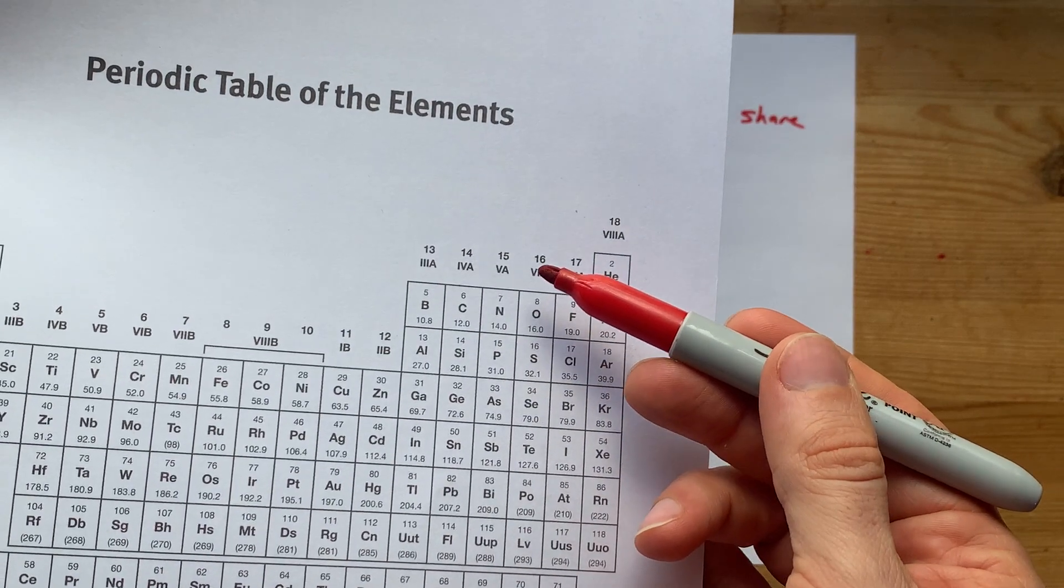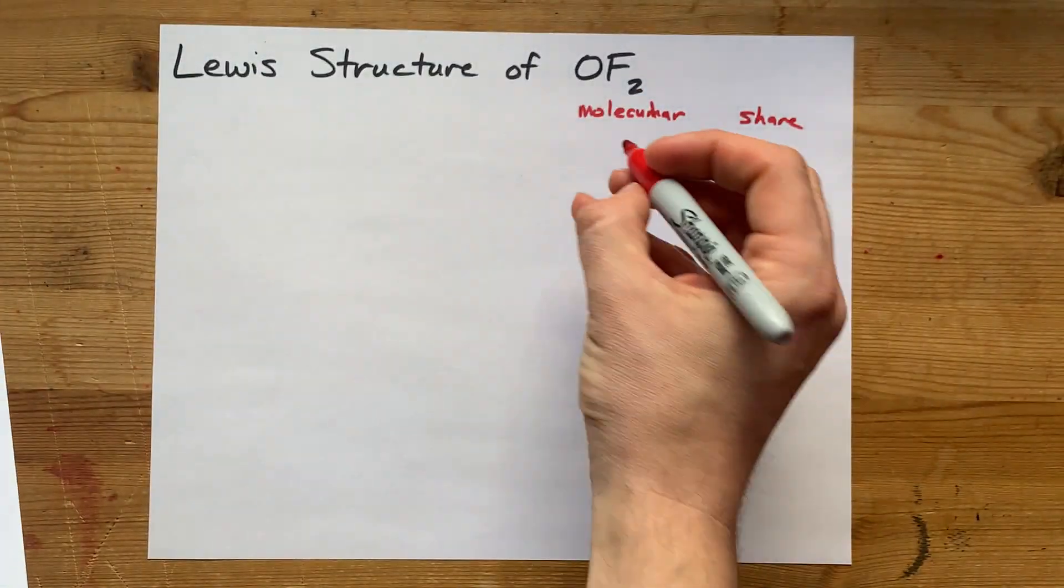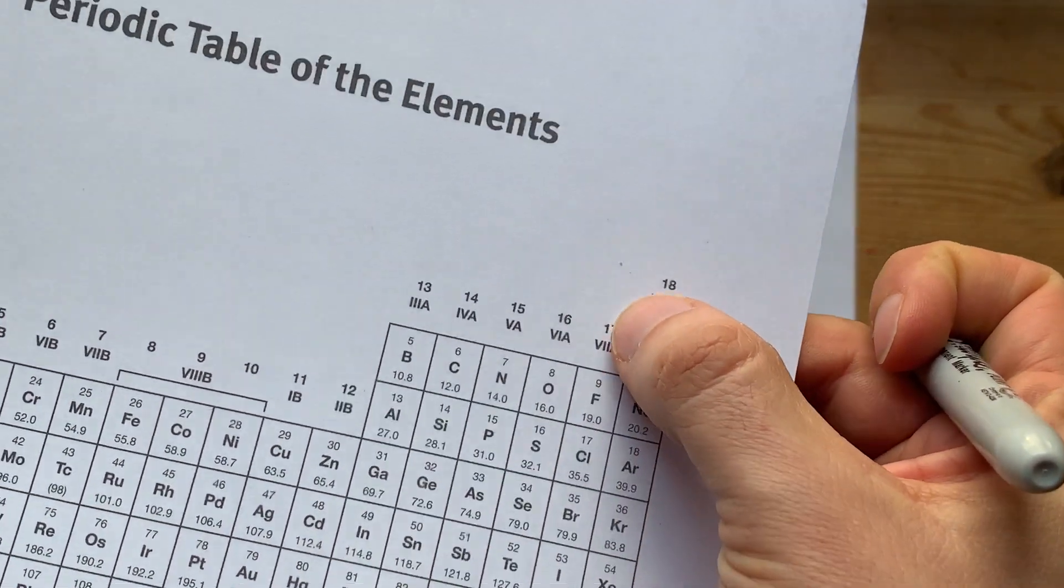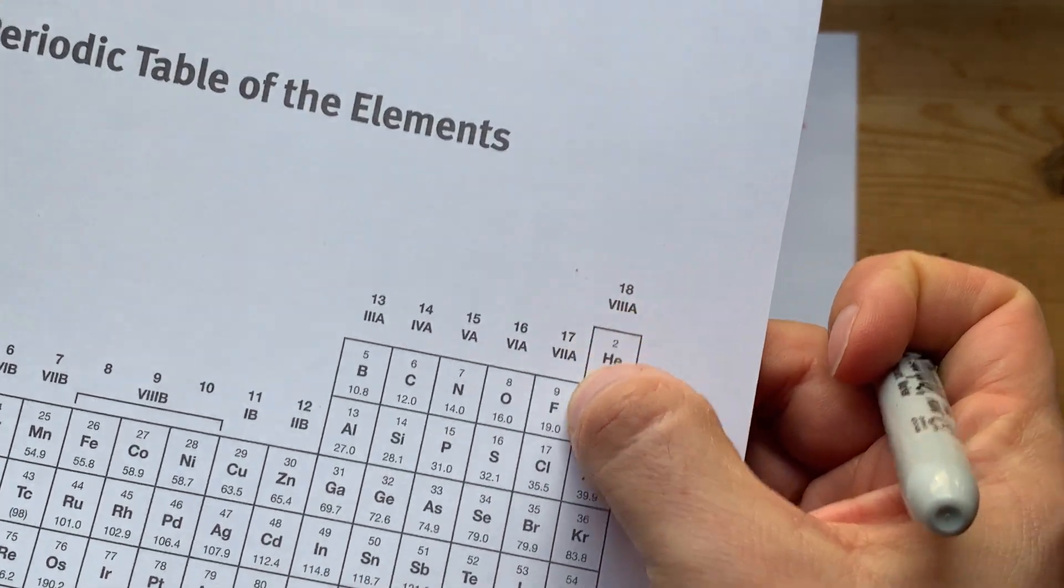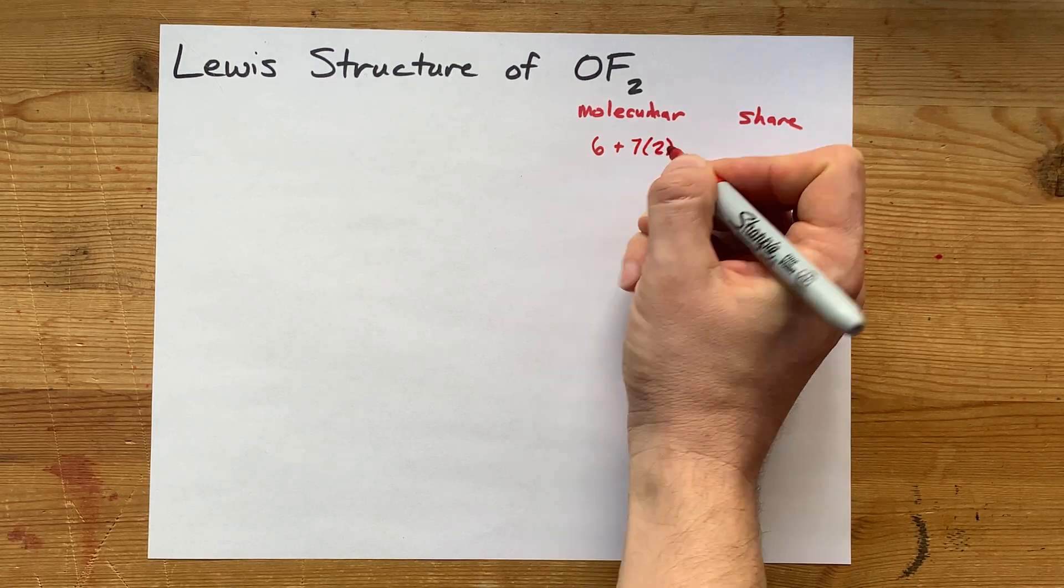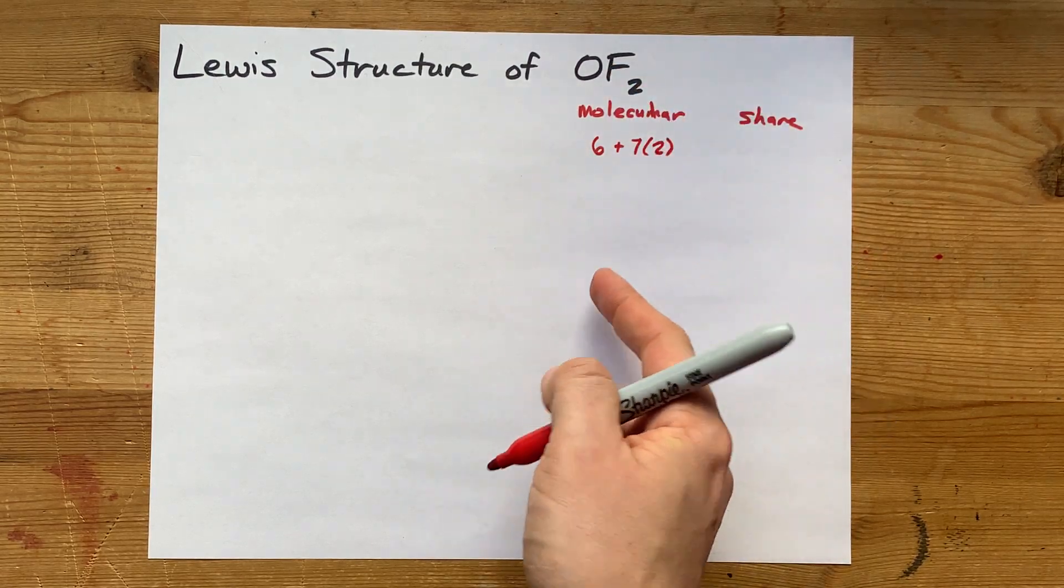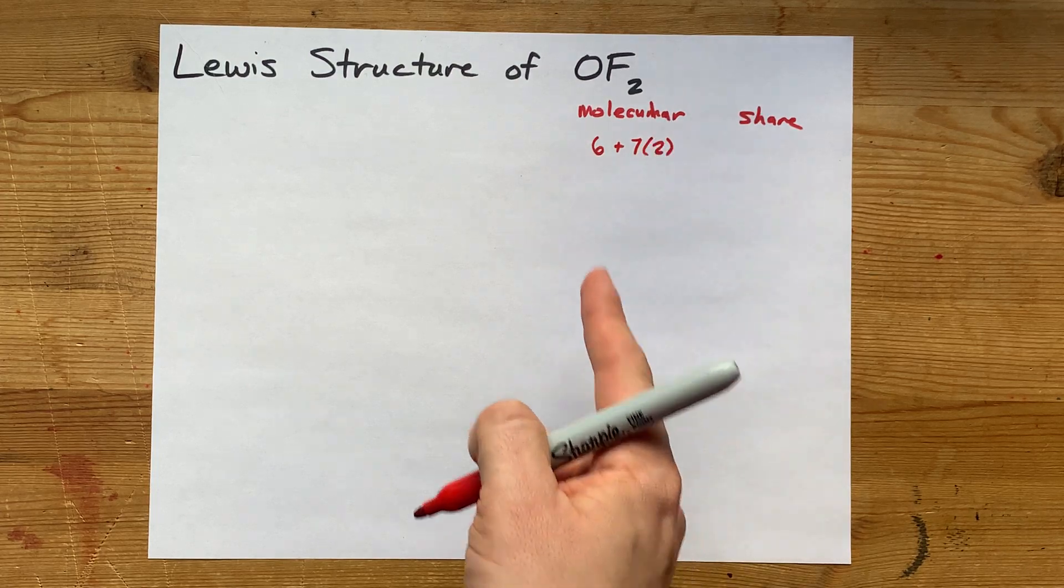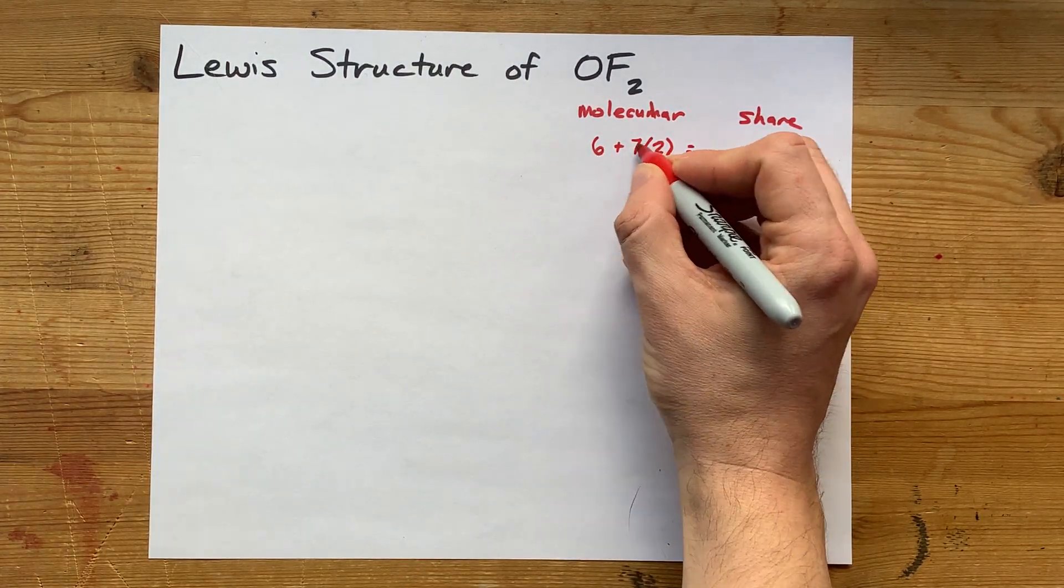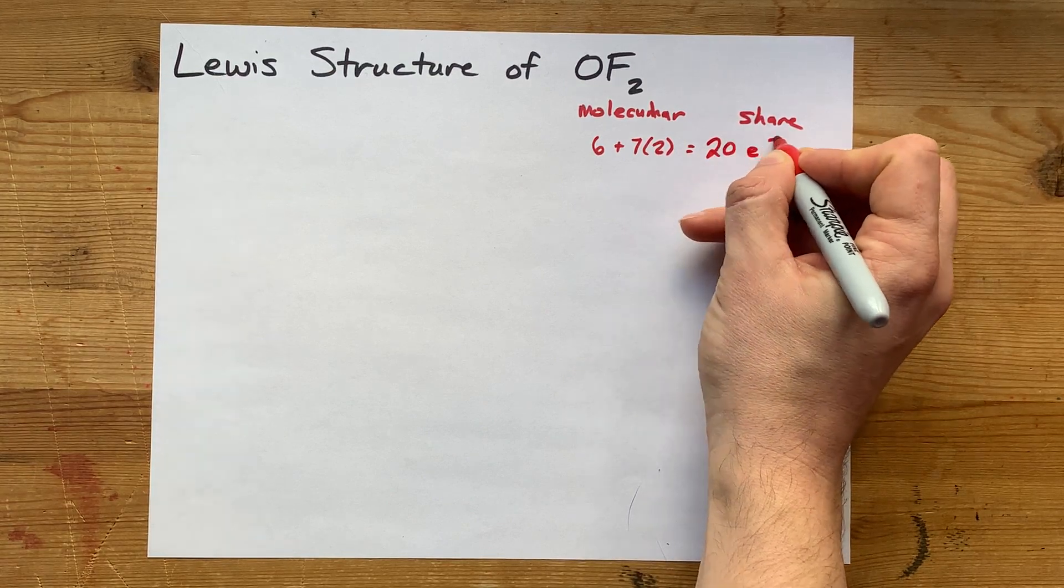Oxygen in group 16 brings six valence electrons with it, and fluorine in group 17 brings seven valence electrons each. But there are two of them in this molecule, so it's seven times two for the number that there are. Six plus 14 gives me 20 electrons total.